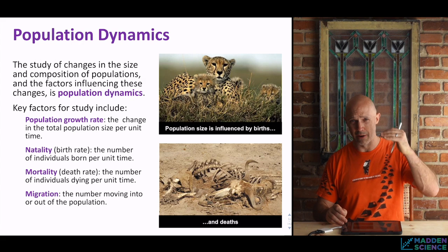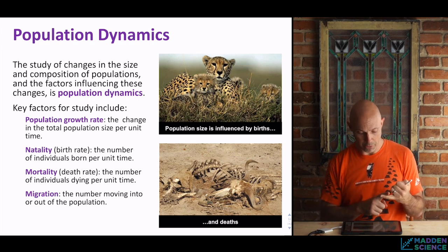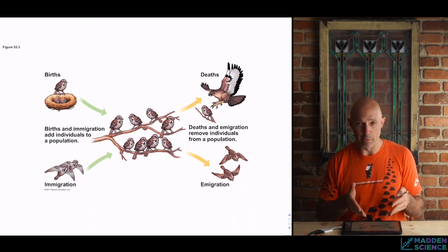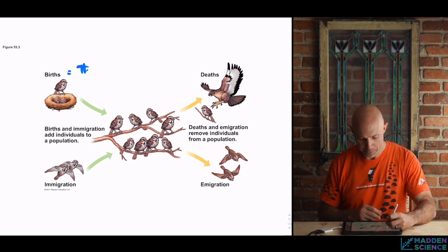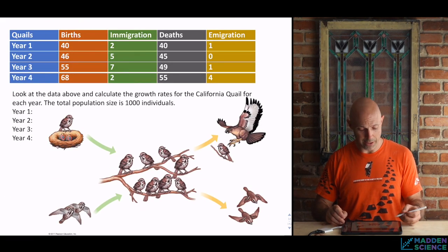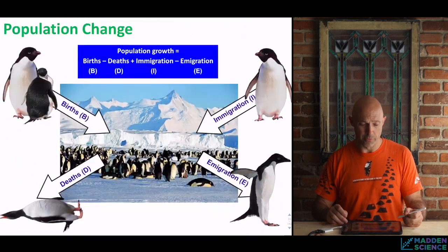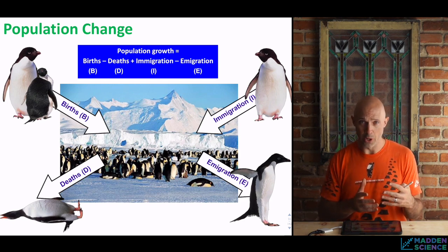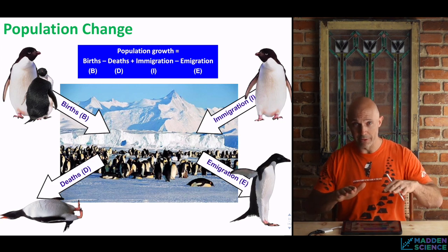The next layer of population ecology above size, density, and dispersion covers the dynamics of what's changing: growth rate, natality or birth rate, mortality, and migration. If you take that number and divide it by time, you get a rate — as seen in the activity we did. For the population change equation, it's just the pluses and minuses: natality plus immigration minus mortality minus emigration gives you the total. For many cases you can assume immigration and emigration either balance out or are zero.